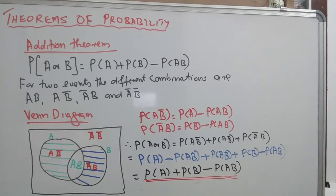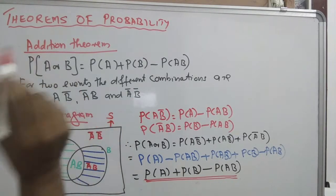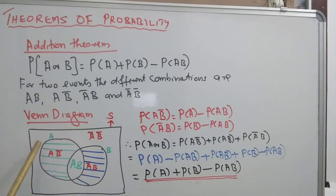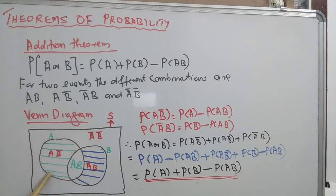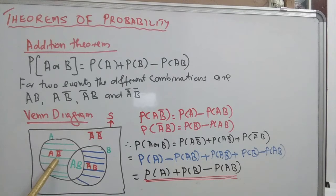In the event diagram, the totality or sample space is expressed by a square. Within that sample space, the two events are illustrated by circles — circle A and circle B — with a possibility of joint occurrence, making it a partially overlapping diagram. The area marked with green ink represents the occurrence of A and non-occurrence of B (AB-bar). The area marked with blue ink represents the non-occurrence of A and occurrence of B (A-bar B).